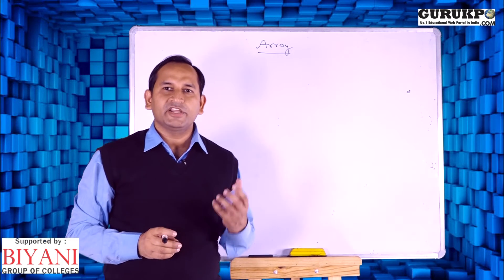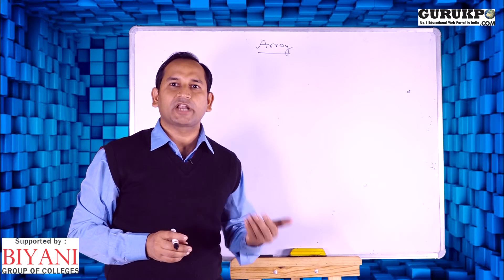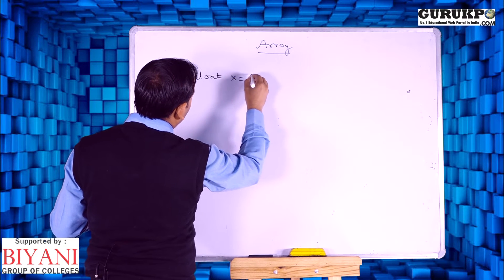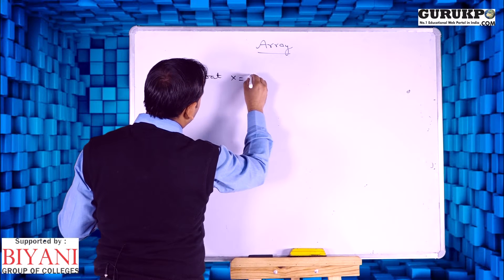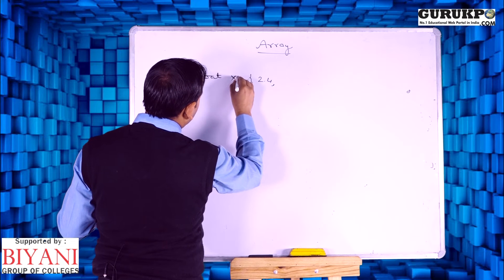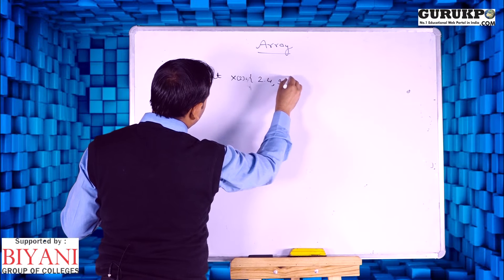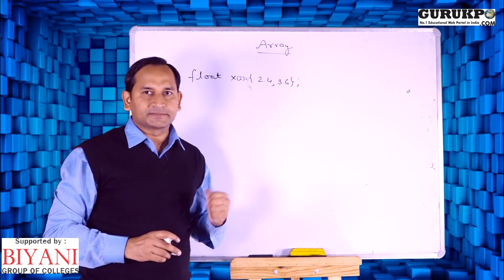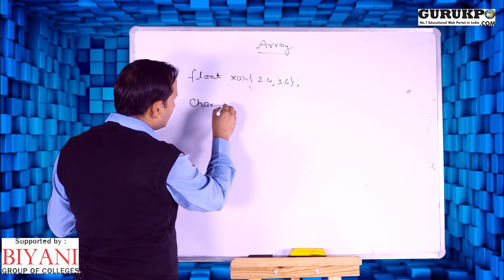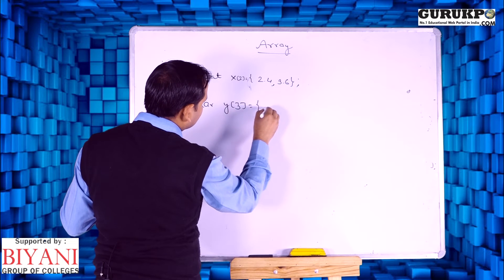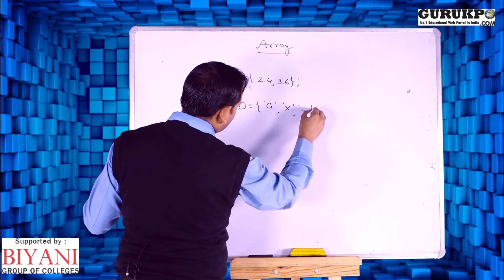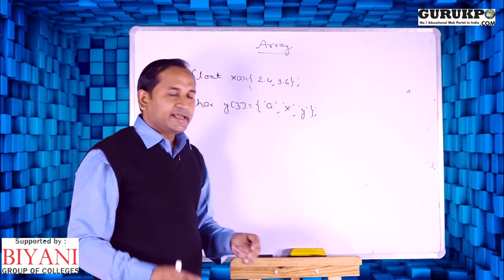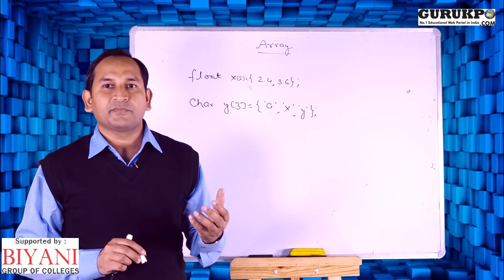An array is very useful to store similar type of elements. Here we are using an int type array. Now we can also use a float type array — for example, float array x which stores two elements, with values 2.4 and 3.6. We can also use a character array, and a character array is also called a string. Here, y is a character array which takes three elements: a, x, and y. An array takes memory at compile time — in other words, an array is the best example of compile-time memory management.